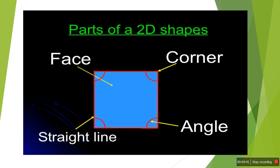Now let us look at the parts of 2D shapes. There are four parts: first is face, second is corner, third is angle, and fourth is straight line. The face is the flat blue area you can see. The corners are at the ends of the shape — this one, this one, this one, this one — there are four corners. An angle is formed where two straight lines intersect each other, making an angle. There are four angles in a rectangle.